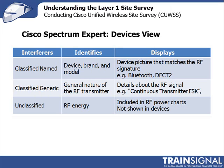It classifies interferers in three groups: classified name, classified generic, and unclassified. The classified name is where the Cisco device can actually not only detect what type of device it is, but can also give you the manufacturer's name — for instance, the brand name and maybe even the model number.